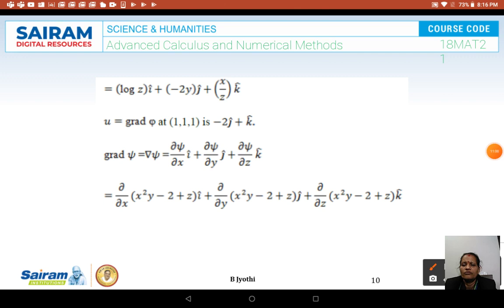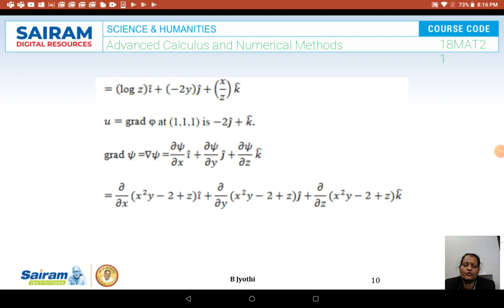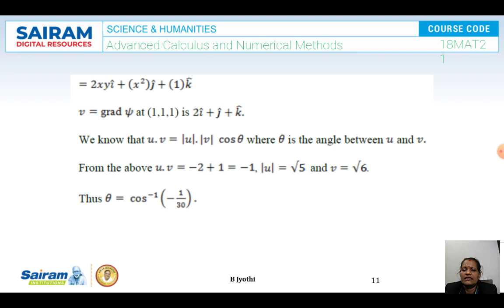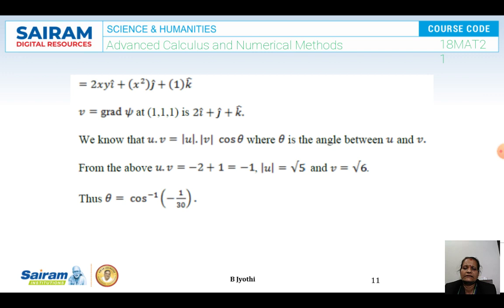For the second surface, ψ(x,y,z) = x²y - 2 + z. Differentiating: with respect to x gives 2xy, with respect to y gives x², with respect to z gives 1. At (1,1,1), v = grad ψ = 2i + j + k. Using u·v = |u||v|cos θ: u·v = -2 + 1 = -1, |u| = √5, |v| = √6. Therefore θ = cos⁻¹(-1/√30).